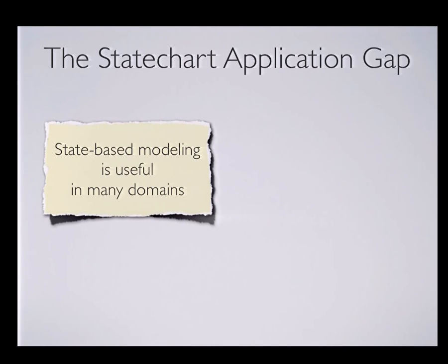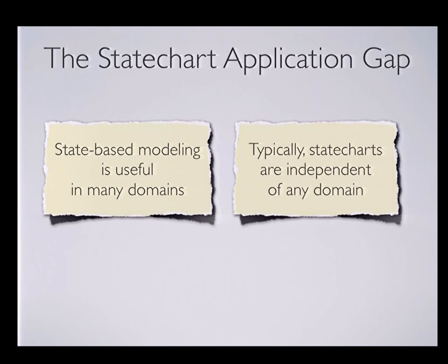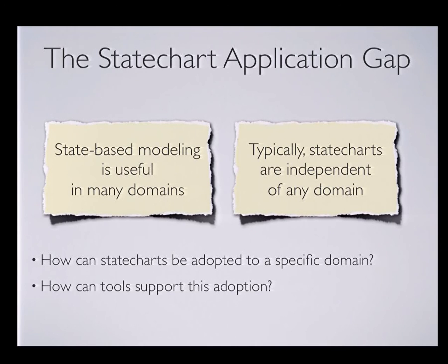Yakindu was built for extensibility right from the beginning. Now let's come to what I mean by domain-specific state charts — which is what this talk is really about. When going into industry, we noticed that state-based modeling is useful in many domains, but in each domain the state chart is usually a bit different. The expression language, the things modeled on transitions, and the events referred to really need to address domain concepts. Standard state-based modeling tools are typically independent of any domain, so our question was: how can we bridge that gap?